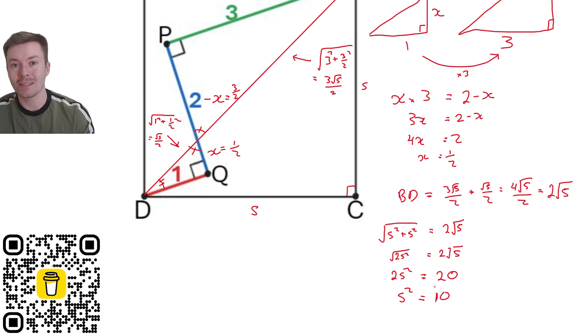Now S squared is the area of the square, because S times S, base times perpendicular height. So that's what we want, and it's just going to be units squared, whatever the units are. So that is the answer, 10 units squared.